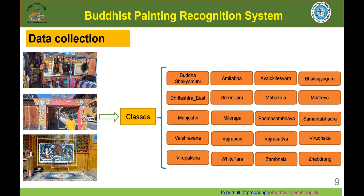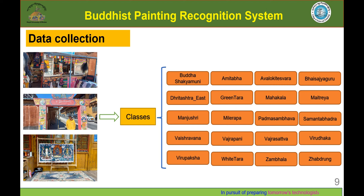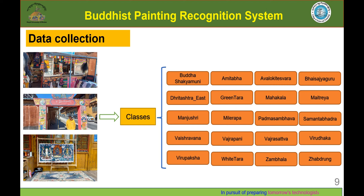For data collection, we first identified 20 different classes of Buddhist paintings, and then we went to different handicraft stores, shops, houses, and different accounts to collect images and videos. For the videos, we had to consider many illumination conditions and angles while recording.